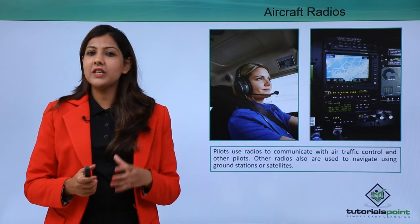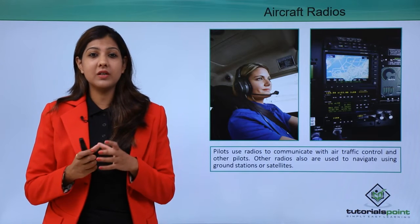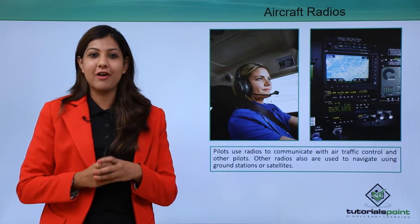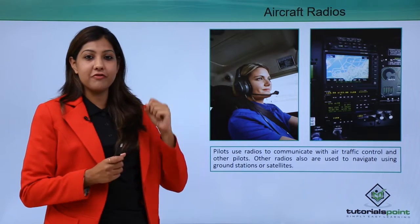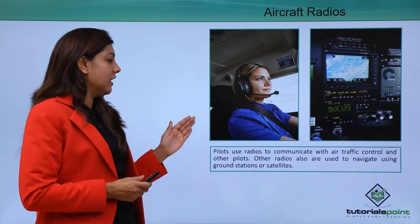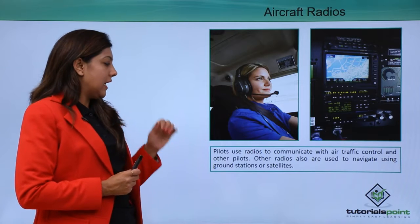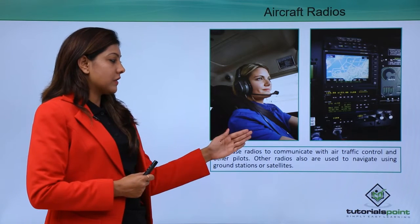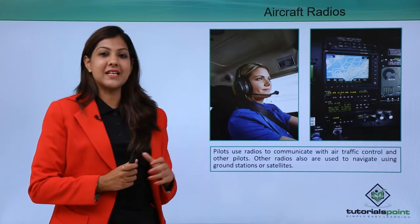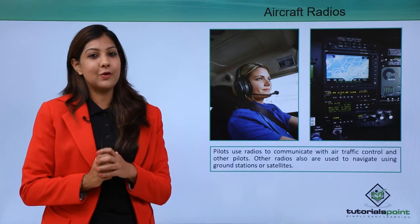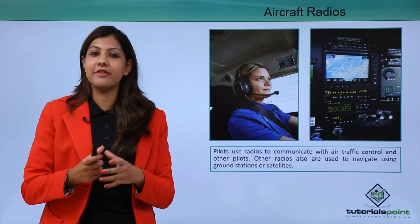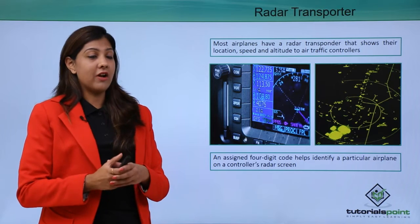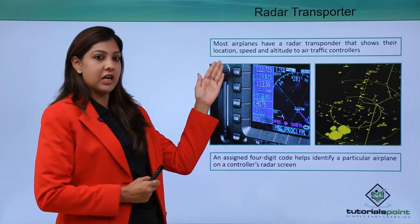Aircraft radios are inside the cockpit and the pilots use them to communicate with the air traffic controller and with other pilots of nearby aircraft. Other radios are also used to navigate using ground stations or satellites, providing a continuous check on whether the aircraft is heading in the right direction.